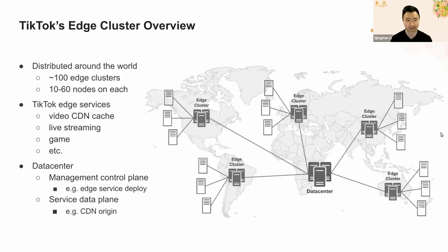This is the overview of TikTok's edge cluster. We have around 100 edge clusters distributed around the world serving TikTok edge services such as video CDN cache, live streaming, gaming, and so on. The size of our edge cluster varies from 10 to 60 nodes on each edge — powerful server nodes with 96 CPU cores and 256 gigabytes of memory per node. We also have a data center that can talk to all of those edge clusters.